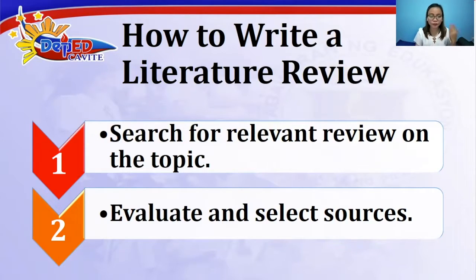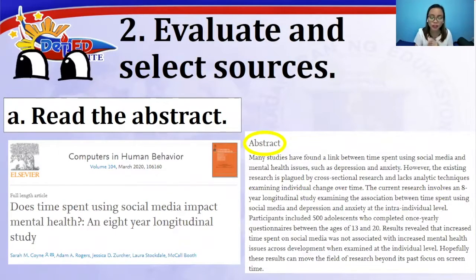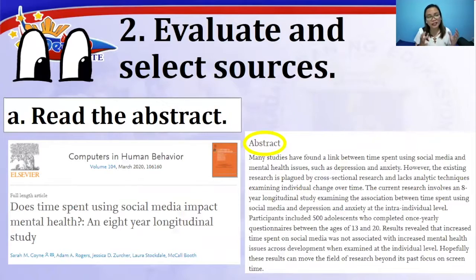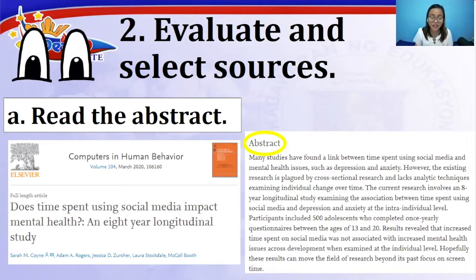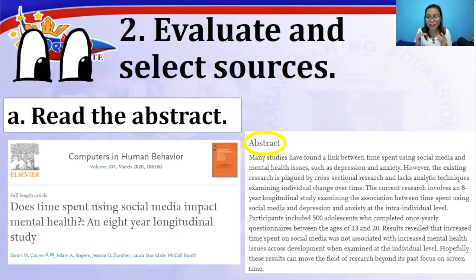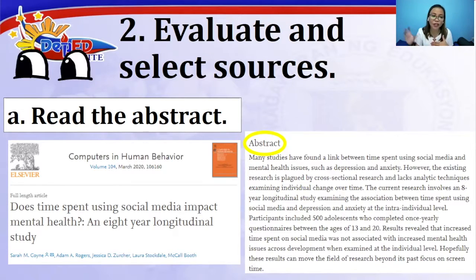That is the first step — search for relevant literature on the topic. The second step is to evaluate and select sources. A good literature review doesn't just summarize; it is not just a copy-paste exercise. We analyze, synthesize, and evaluate, making sure that sources are credible and published by accredited scholars or authors. Like telling a story, literature review has an introduction, body, and conclusion.